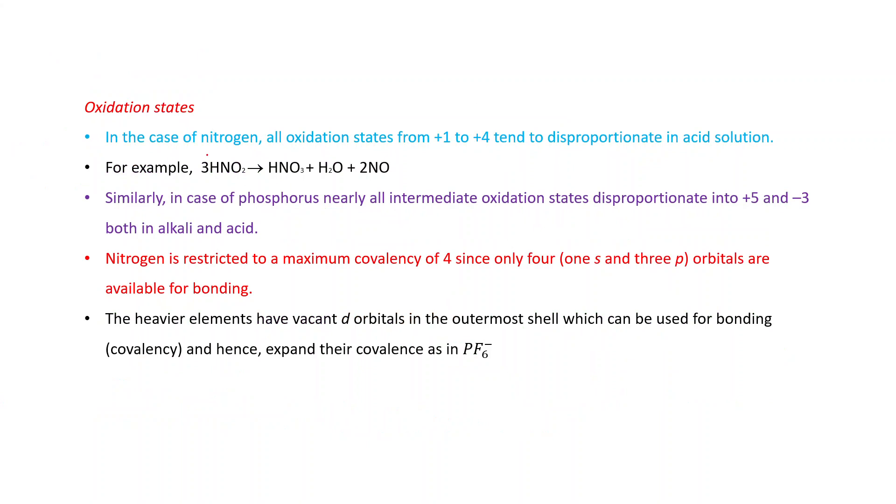In the case of nitrogen, all oxidation states from +1 to +4 tend to disproportionate in acid solution. What is the meaning of disproportionate? It means the same element undergoes oxidation and reduction. For example, HNO2: for oxygen this is -4, hydrogen is +1, so nitrogen is in +3 oxidation state. In HNO3, nitrogen is in +5 oxidation state. In 2NO, nitrogen is in +2 oxidation state. So +3 is changing into +5 and +2, that is nitrogen undergoing oxidation as well as reduction. This is the disproportionation reaction.